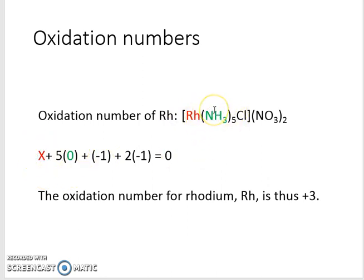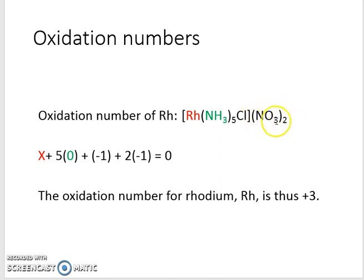Our ammonia doesn't have a charge, so it's five times zero because we have five of them. Your chlorine has got a charge of minus one because it's in group seven, so this ligand called chloro has got a charge of minus one. And then we have the nitrate anion — this polyatomic anion has got a charge of minus one, and we have two of these anions, so it's two times minus one.